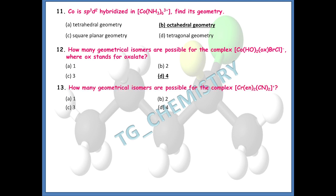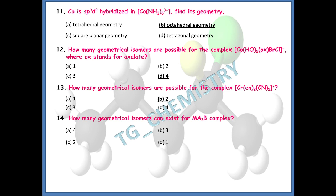How many geometrical isomers are possible for the complex chromium(ethylenediamine)(bisethylenediamine)(biscyano)? This is a cationic complex. The answer is two — option B. Two geometrical isomers are possible for this complex.